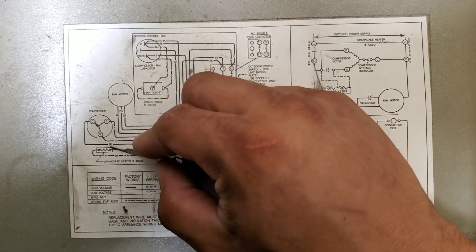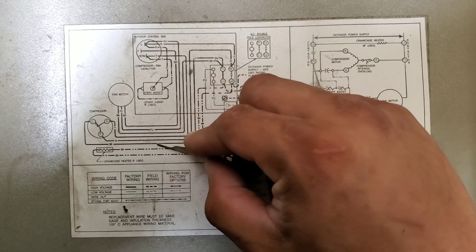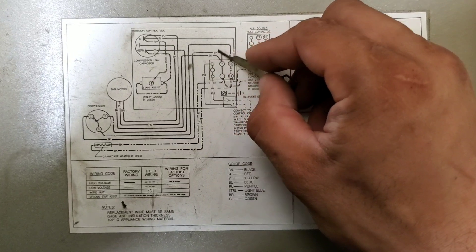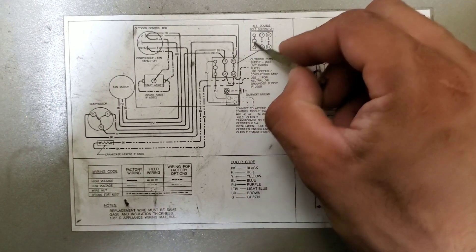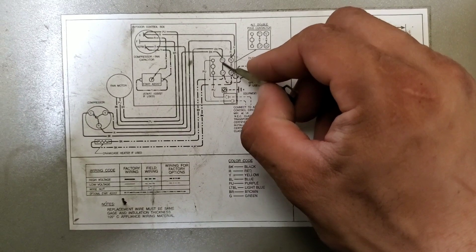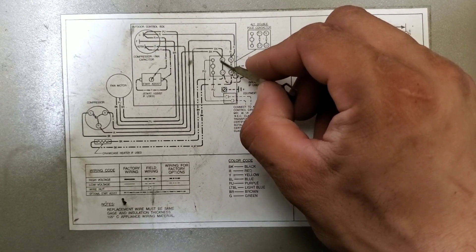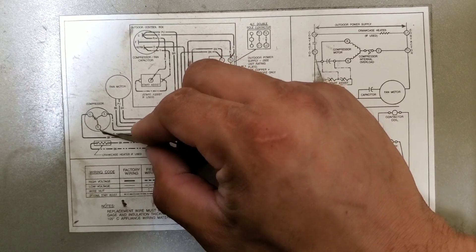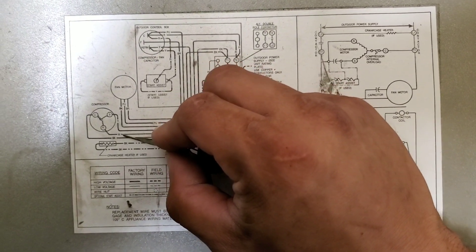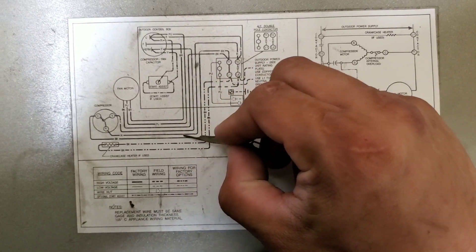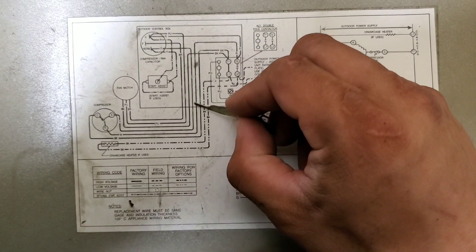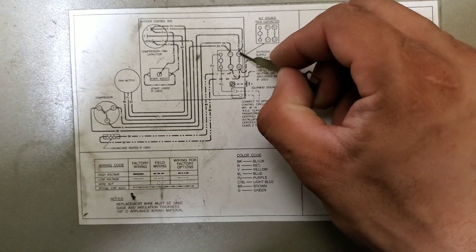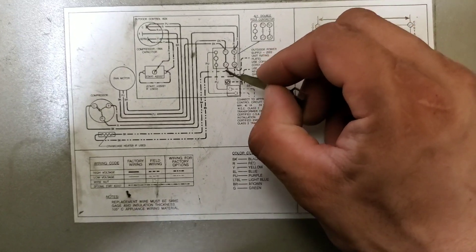If we follow the common, it's labeled black and you'll follow it all the way through. It'll run up and tie into your contactor onto the T1 side. Now we look at our run, the wire is labeled R red, and it feeds all the way through and ties into the T2 terminal of your contactor.